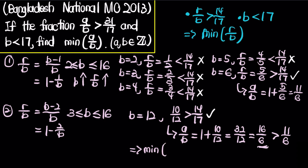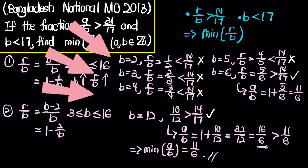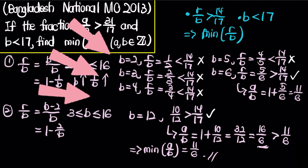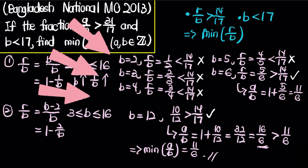So the minimum value of a over b, by considering these two cases, is equal to 11 over 6. And we are done for this problem. If you want to solve more problems from the Bangladesh National Mathematical Olympiad, be sure to check out this video over here.